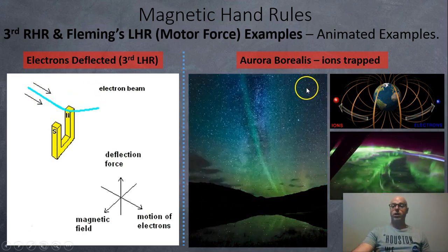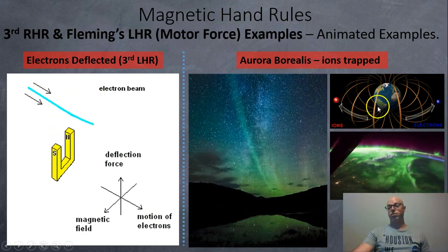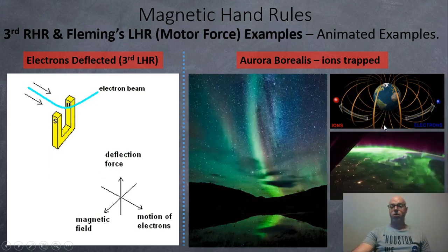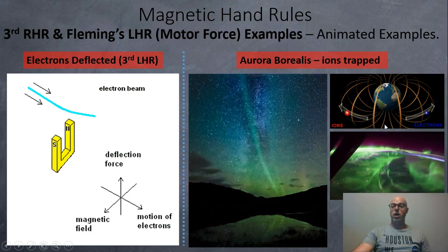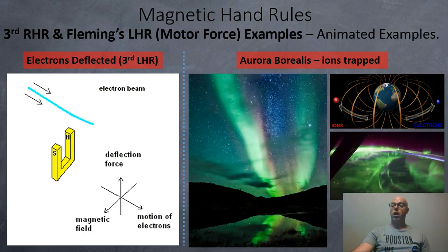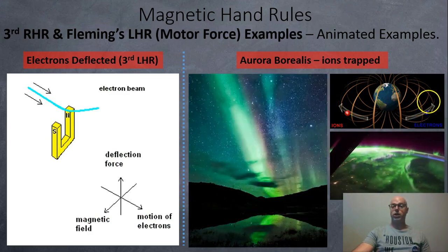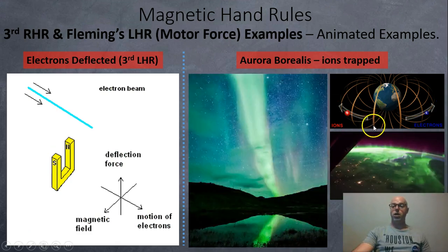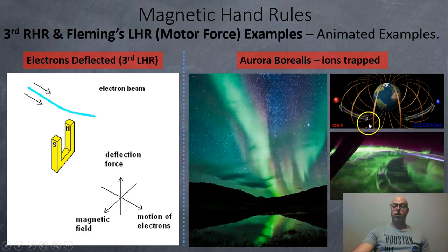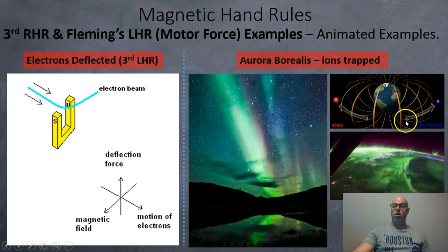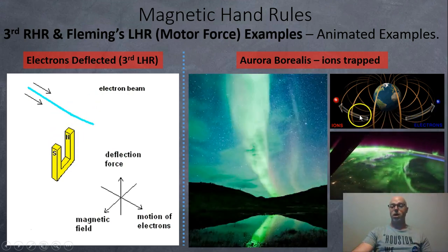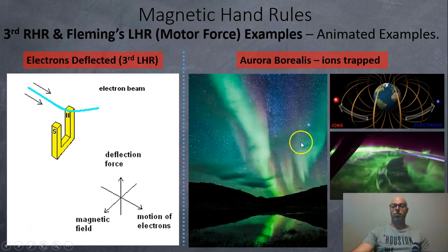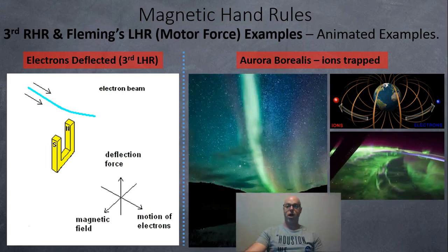The aurora borealis is the result of the Van Allen belts protecting the Earth. All the nuclear fusion going on in the sun produces gamma radiation, electron radiation — called beta radiation — and helium nuclei, or alpha radiation. When they run into the Earth's magnetic field, they're deflected around the Earth or into a spiral. When they spiral in through the atmosphere, they give us the aurora borealis and the aurora australis.